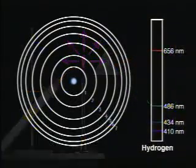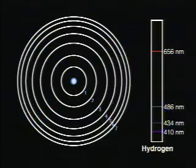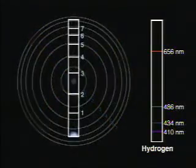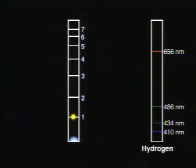A cross-section of an atom shows the energy levels similar to the rungs of a ladder. When energized, the electrons move temporarily to higher energy levels.